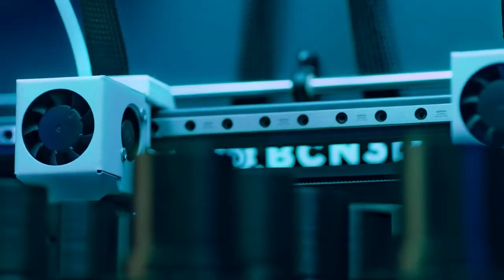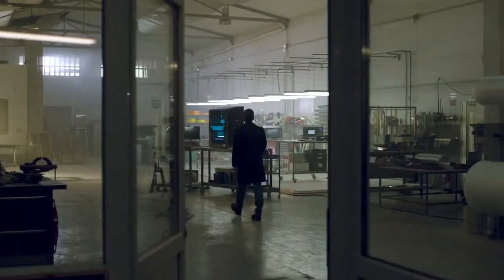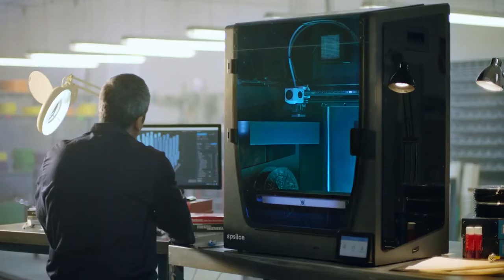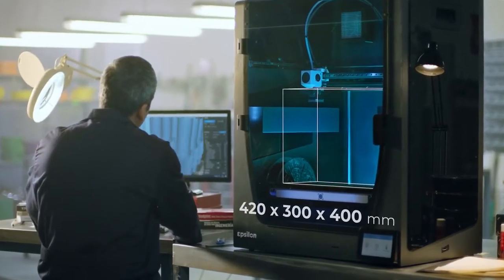The BCN 3D Epsilon features one of the largest build volumes on the market, enabling you to print larger models and bigger parts with a wide range of materials.